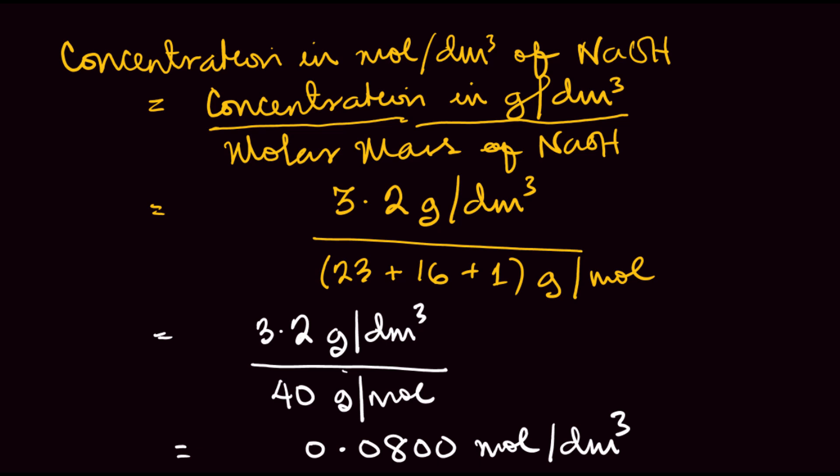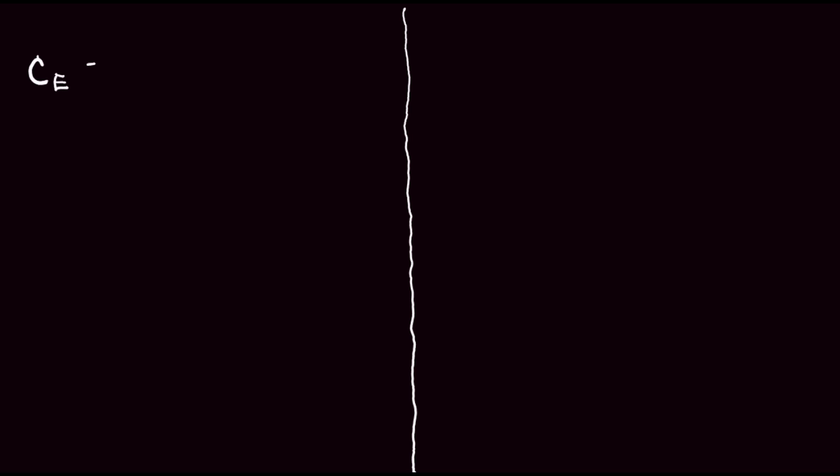This makes sense because we're working with a strong monobasic acid and a strong base with a 1:1 mole ratio. Since they have nearly equal concentrations, the titre value of the acid should be close to the titre value of the base. Note that per the instruction, the acid is labeled E and the base is labeled F. CE = 0.0814 mol/dm³.